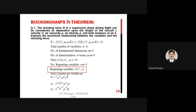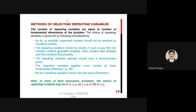Good morning everybody. Today's topic is on Buckingham Pi theorem methods and model analysis. In the Pi theorem method there is a need to select the repeating variables. Repeating variables are equal to the number of fundamental dimensions of the problem. The choice of repeating variable is governed by the following conditions: it must have a geometric property, a flow property, and a fluid property.